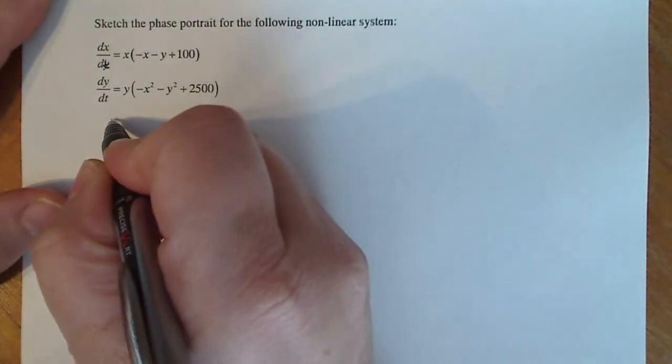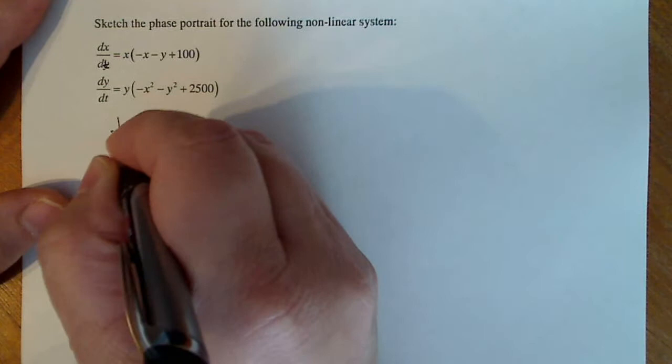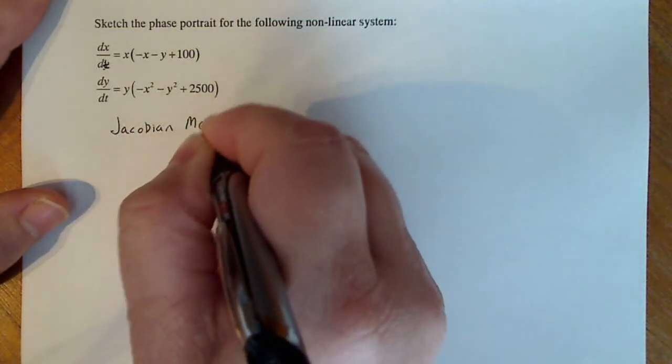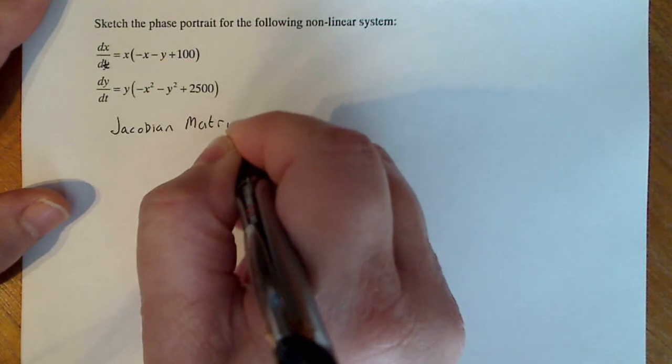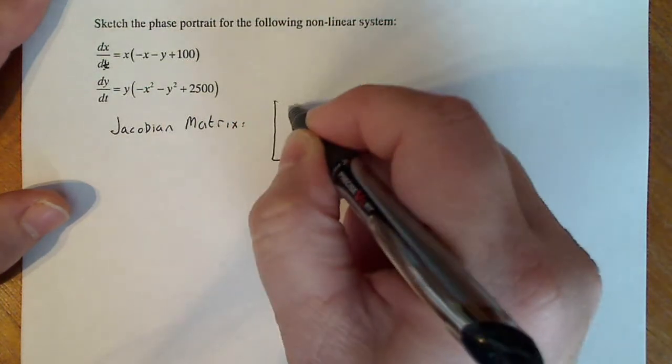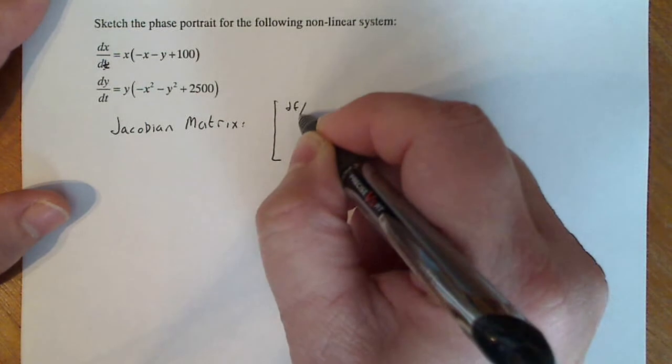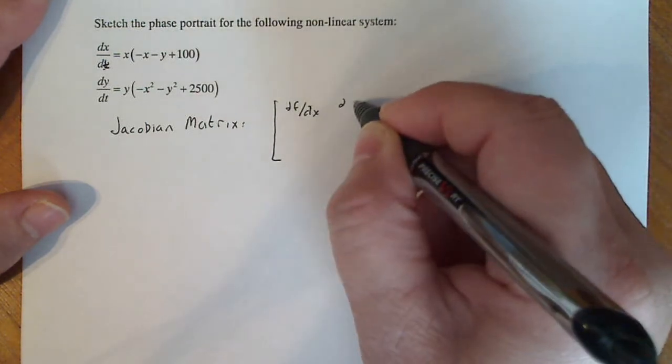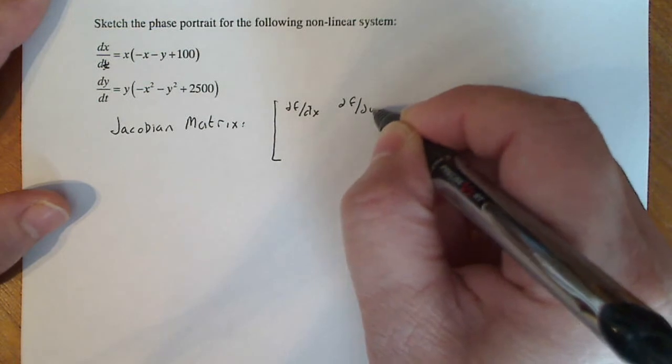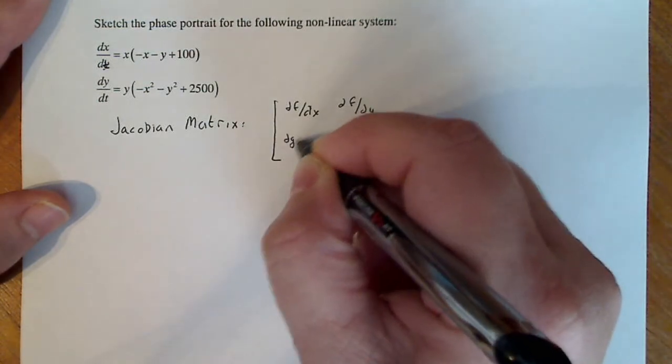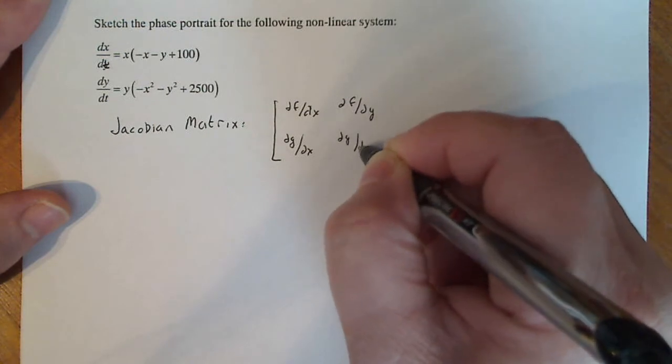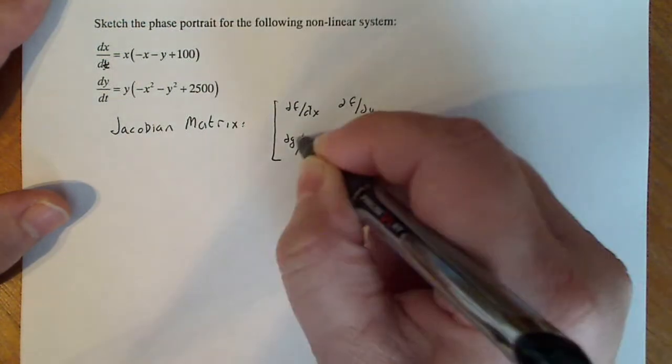Now according to mathematics, the Jacobian matrix that we're going to use here to linearize looks like this. So I'm going to take the partial of F with respect to X for that first part, then a partial of F with respect to Y and the partial of G with respect to X and then the partial of G with respect to Y.